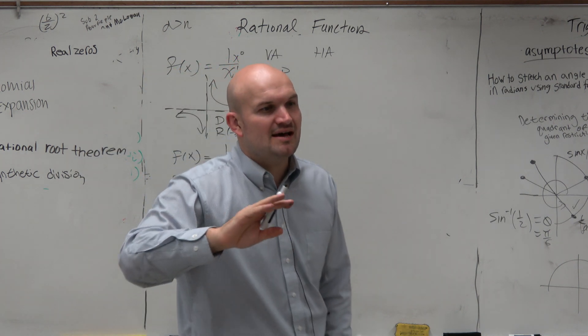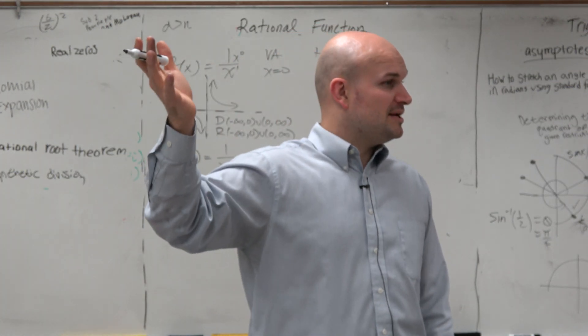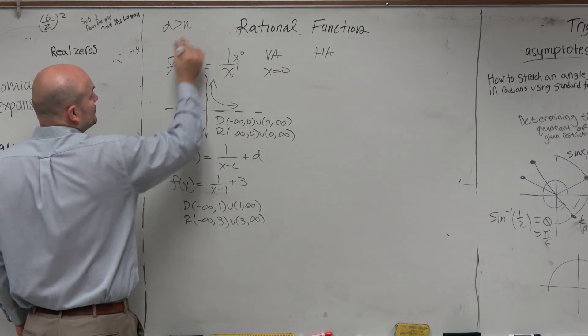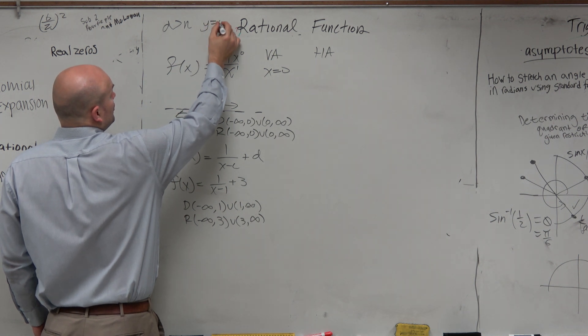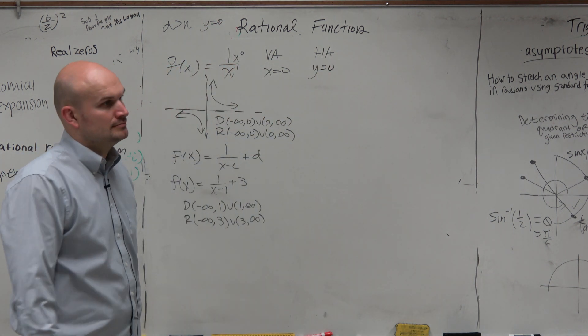So it doesn't matter if it was 7 in the denominator, 5 in the numerator, 11 in the denominator, 2 in the numerator. Any time you have a degree in the denominator larger than the degree in the numerator, your horizontal asymptote is at y equals 0.